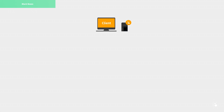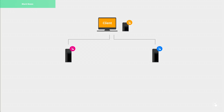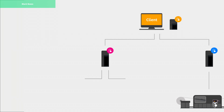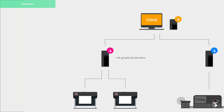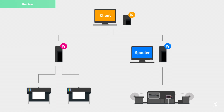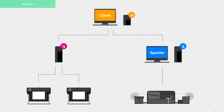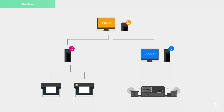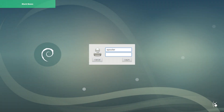Even if just a single user is provided for in the license, it is possible to run as many black box computers as needed. A black box computer is a RIP station without the RIP software interface launched on it. Because it doesn't require any graphical interface, a black box is not considered a user. It's also possible to launch the spooler on it since a spooler session doesn't require a user either. To run only the spooler on a Caldera station, just log on to the spooler session when starting by typing spooler as the password.